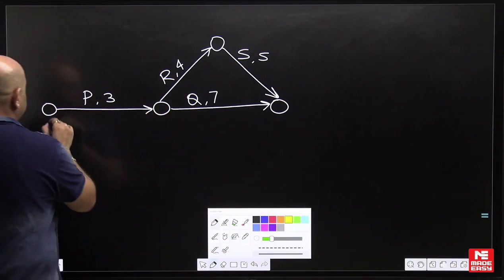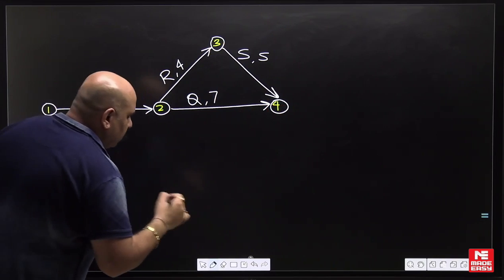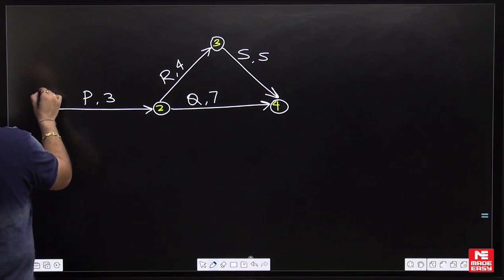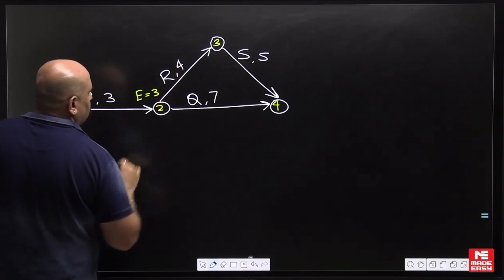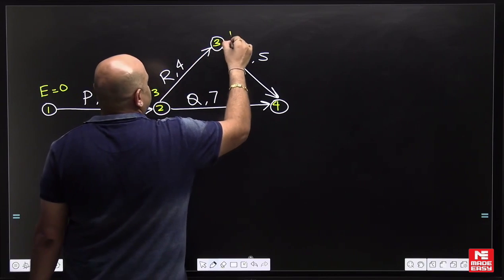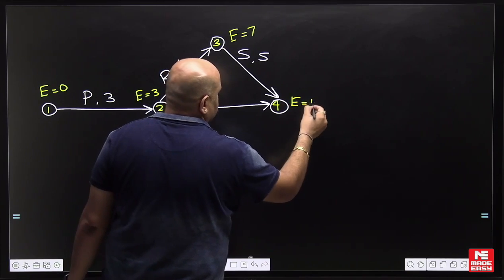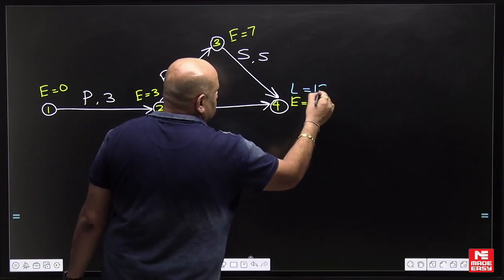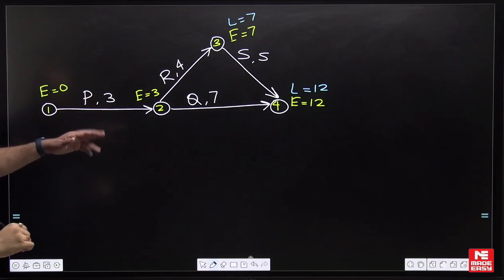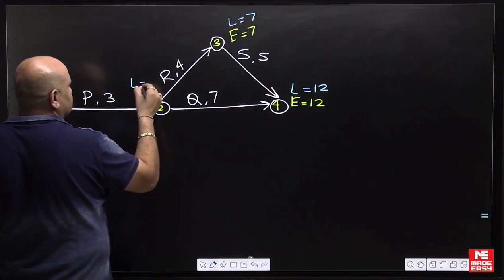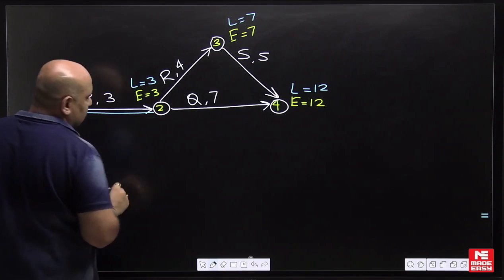Based on the data we made the network diagram, then we perform forward and backward pass. Numbering the events 1, 2, 3, and 4: earliest start time is zero; for event 2, it is 3; for event 3, it is 3 plus 4 equals 7. For event 4, there are two options — 7 plus 5 equals 12, and 3 plus 7 equals 10 — so the maximum is 12. The project duration is 12 days. Backward pass: taking L equals 12 for the last event; for event 3, 12 minus 5 equals 7; for event 2, two options — 7 minus 4 equals 3 and 12 minus 7 equals 5 — we select the minimum, which is 3; and for event 1, it is 0.